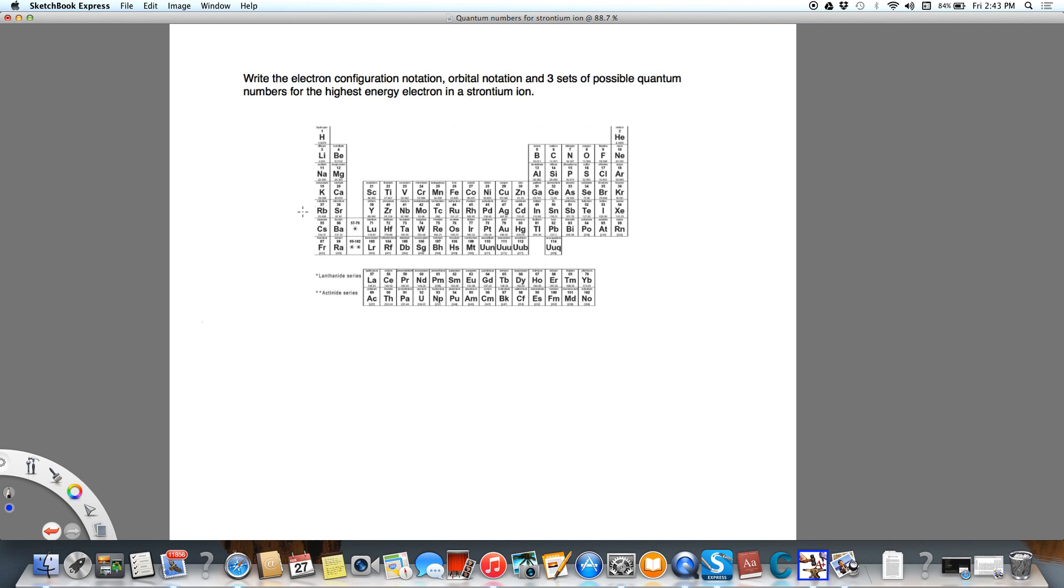Let's look at strontium. Strontium is an alkaline earth element, it's right there. So it's in period five. However, strontium is going to lose two electrons to become strontium 2+, so it's going to end up looking like the nearest noble gas, which in this case is krypton.